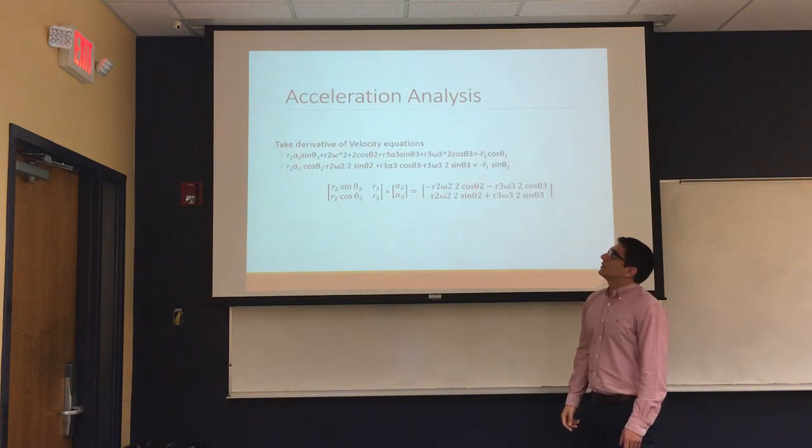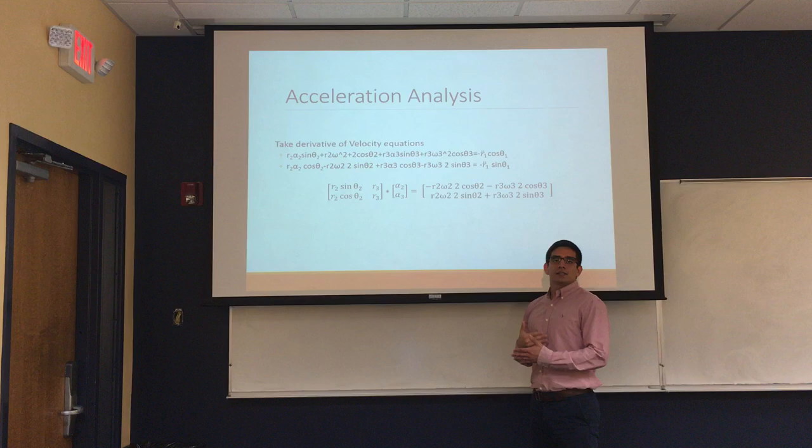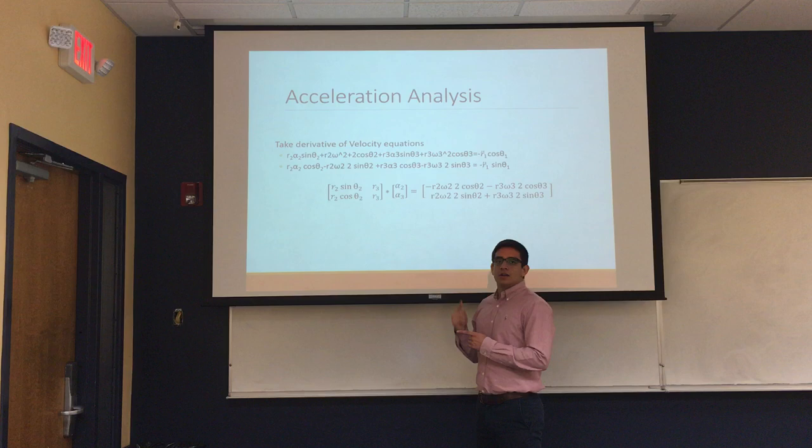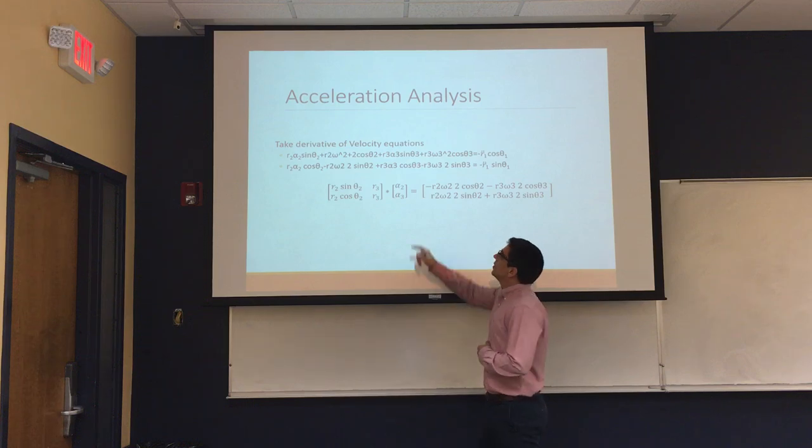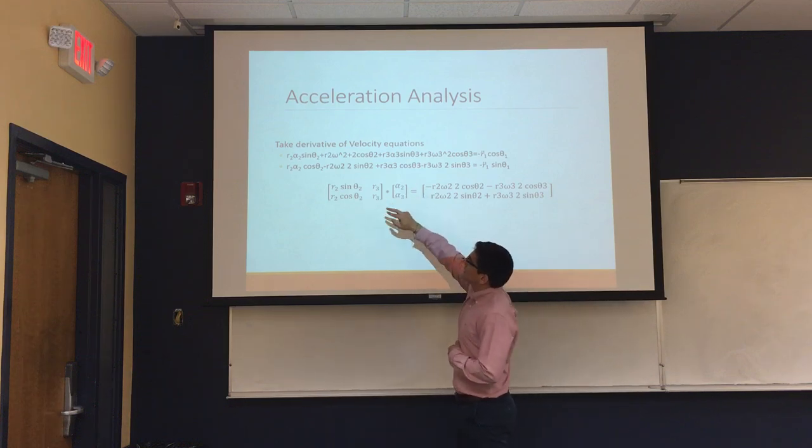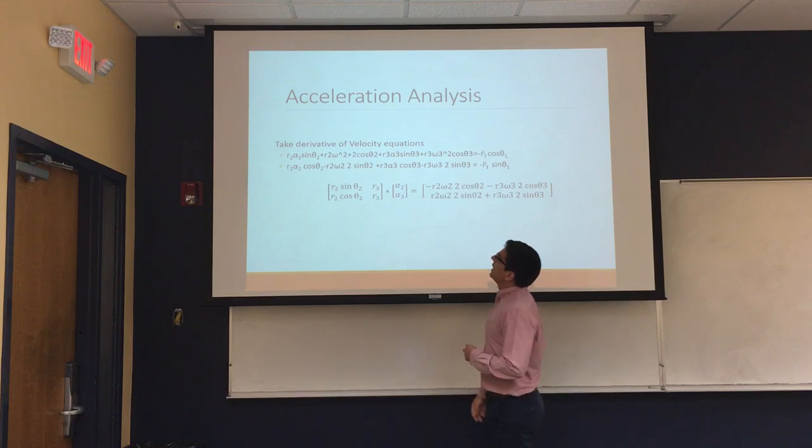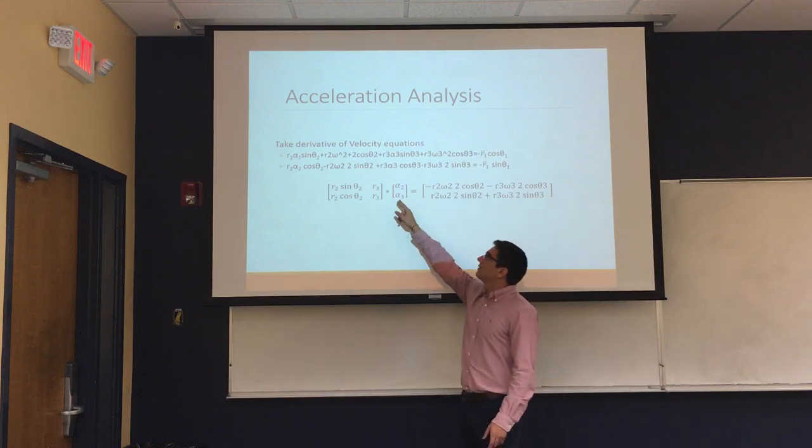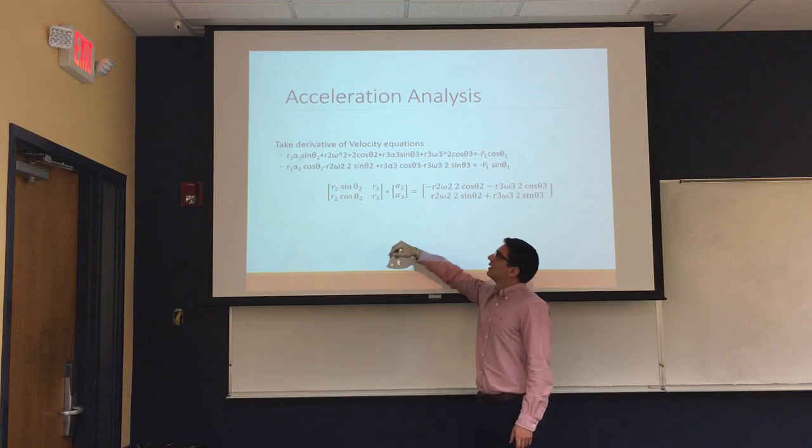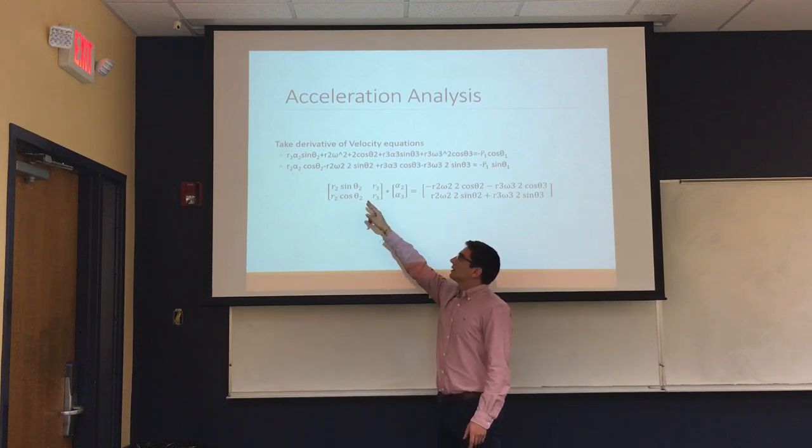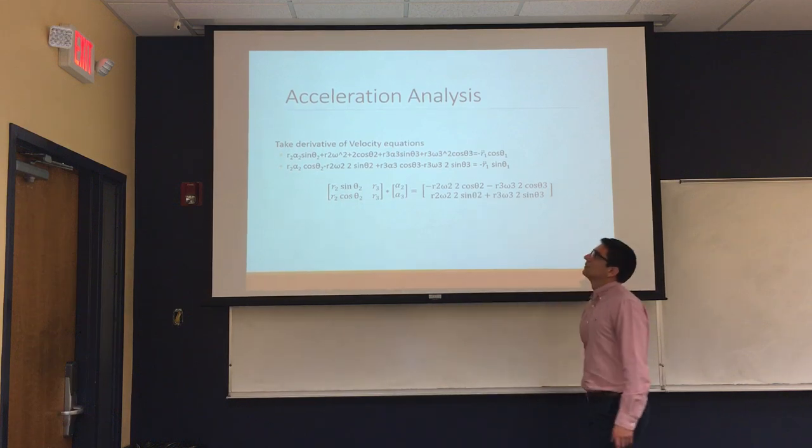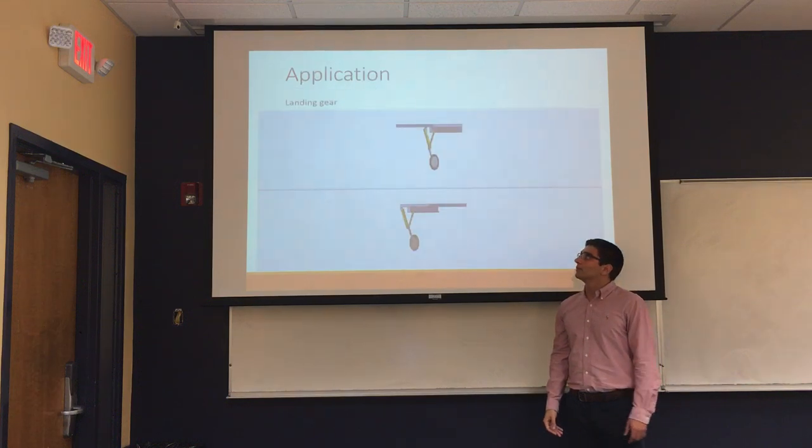For the acceleration analysis, it's basically the same step all over again. We would then take the derivative of the velocity equations, which would then give us our acceleration equations right here. And then same thing, we would take the matrix of these to solve for our alpha2 and alpha3. Once again, we would then take the inverse of this matrix and then multiply it to this. And that would give us our acceleration values.